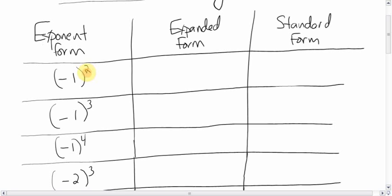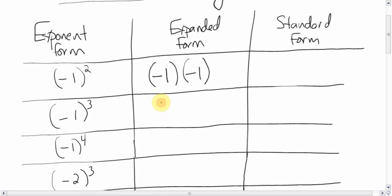So, negative 1 to the power 2. Before you get all squeamish and think this sounds too hard — relax, it's no big deal. You know your rules of exponents. This number tells you how many times you multiply by the base. So it's negative 1 times negative 1. What is negative 1 times negative 1? Signs are the same, it's positive 1. You can think that the negative signs canceled each other out, and that's why you get positive 1.